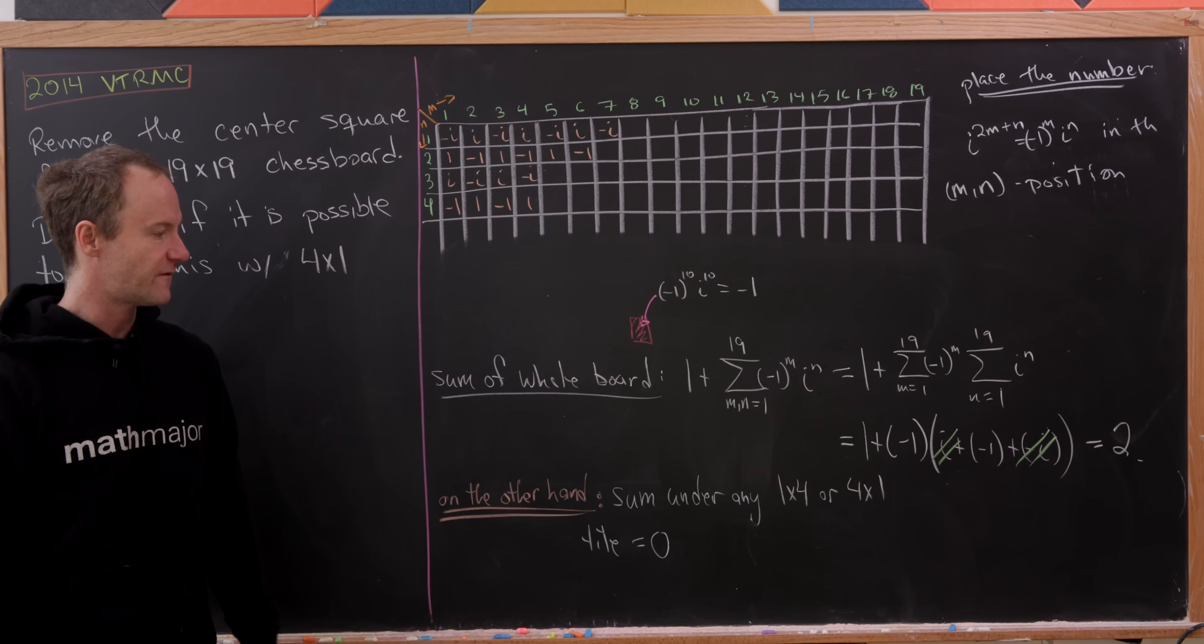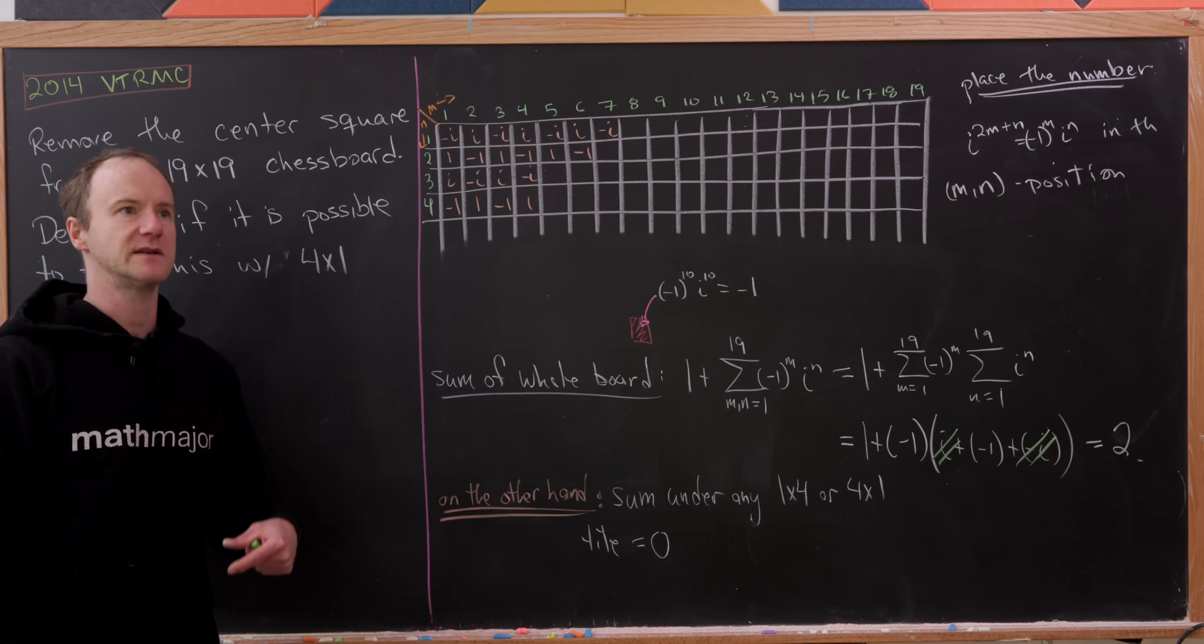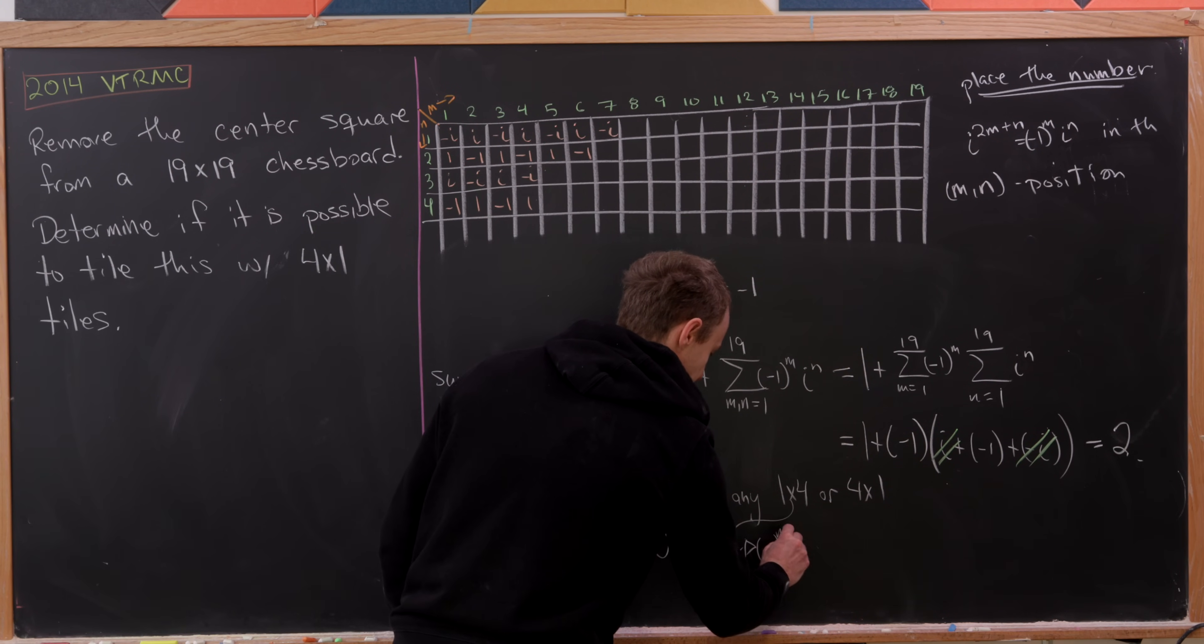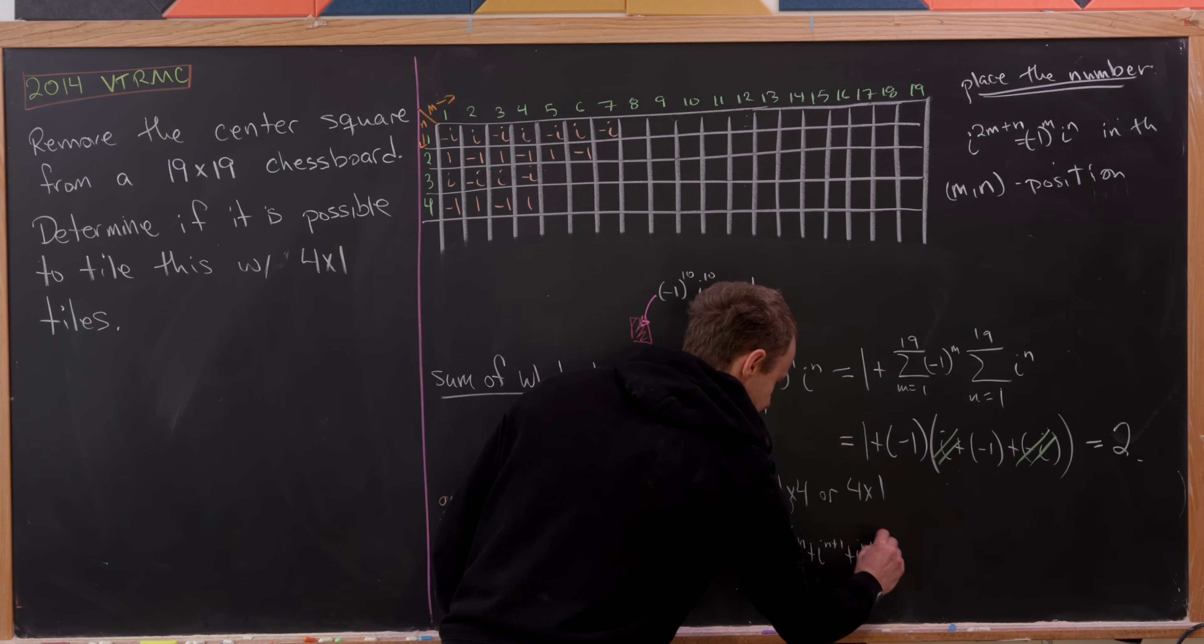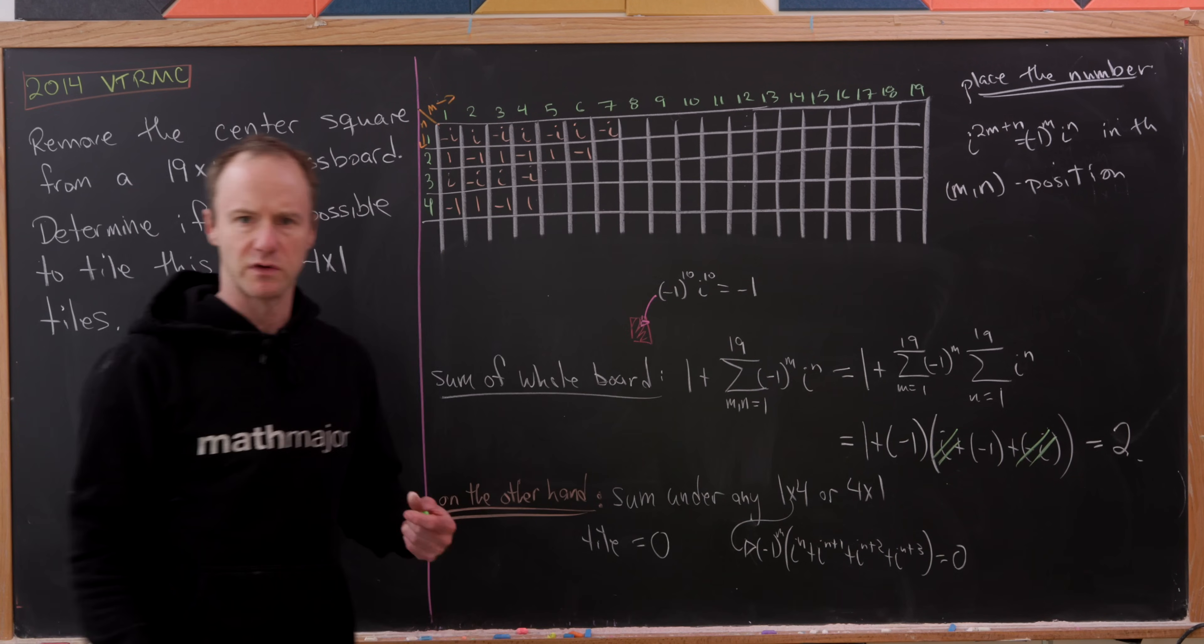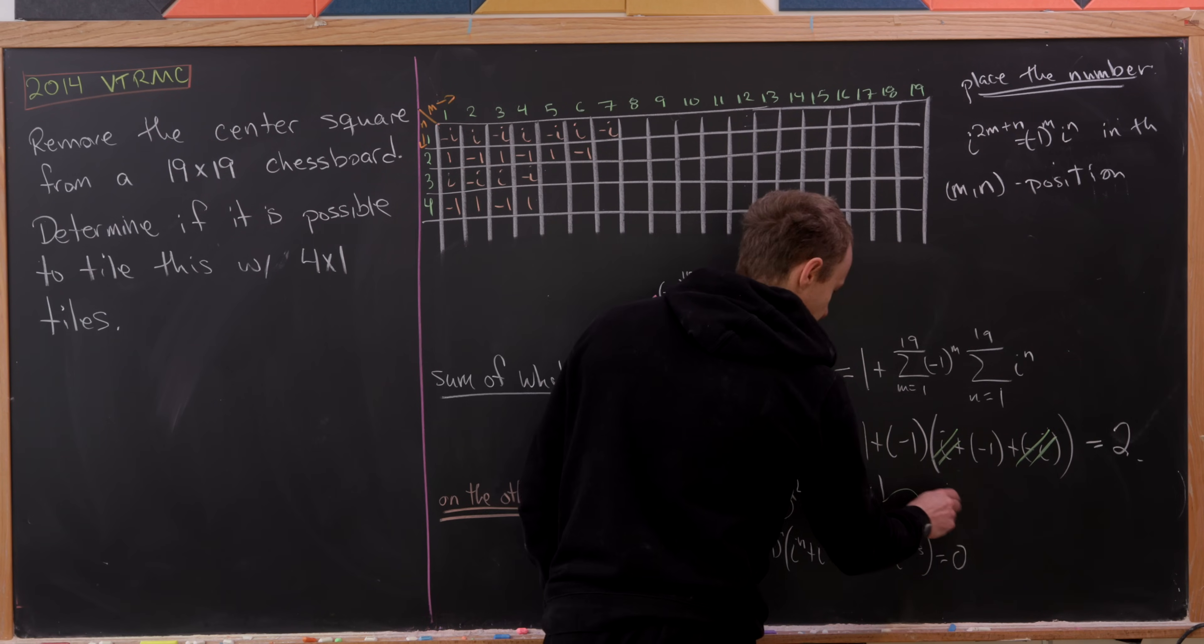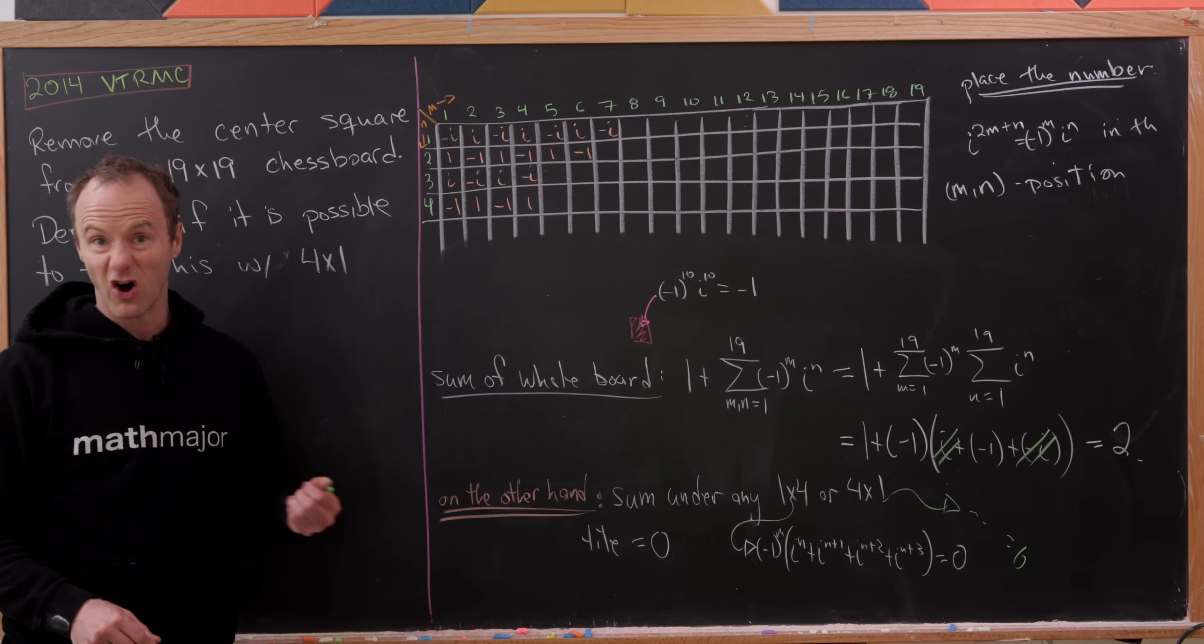So for a 1 by 4 tile, we're going to fix m, and then n will go from n to n plus 1 to n plus 2 to n plus 3. So in other words, the sum under the 1 by 4 tile is minus 1 to the m, and then we'll have i to the n plus i to the n plus 1 plus i to the n plus 2 plus i to the n plus 3. But that's pretty clearly equal to 0. You can factor out an i to the n if you'd like to.